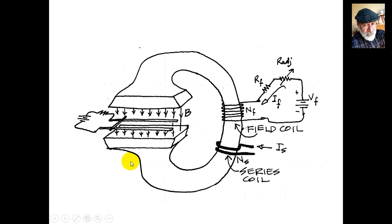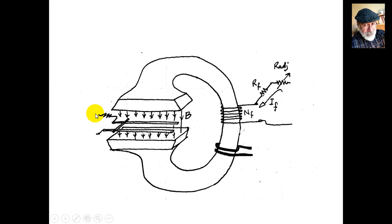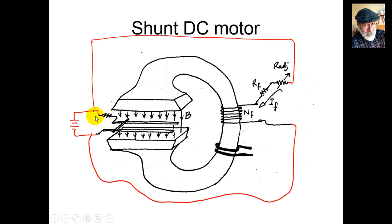Going back to our machine. For independent excitation I have removed all sources. I connect the armature circuit — resistance of the armature and induced voltage — to an external battery VT. Then on the right, I connect the field coil circuit in parallel with the armature. Another word for parallel is shunt. Connecting the field coil circuit in shunt with the armature gives us shunt excitation — this is a shunt DC motor.